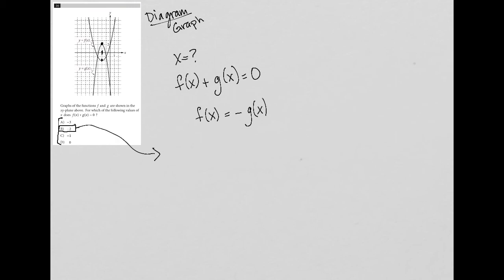Again, because when x equals negative 2, f of x, right, which is the upward facing parabola, is equal to negative 2. And g of x is equal to positive 2. Another way to say this is